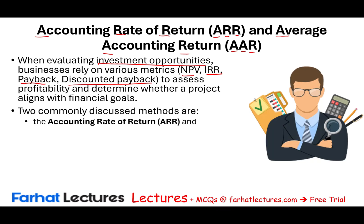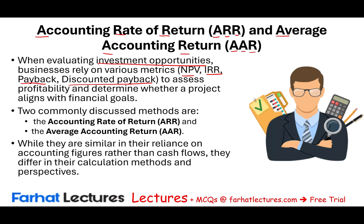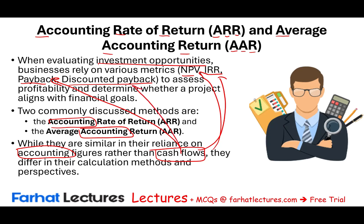ARR and average accounting rate of return — while they are similar in their reliance on accounting, notice in both computations we have the word accounting, and this is important. They don't rely on cash flow. So one of their weaknesses, right from the get-go, is that they are not cash flow. NPV, IRR, payback, and discounted payback all use cash flow. These ratios use accounting figures, and this is one of their weaknesses.